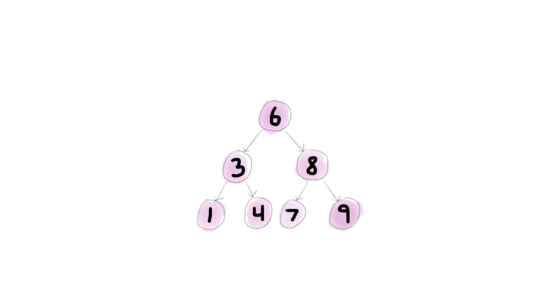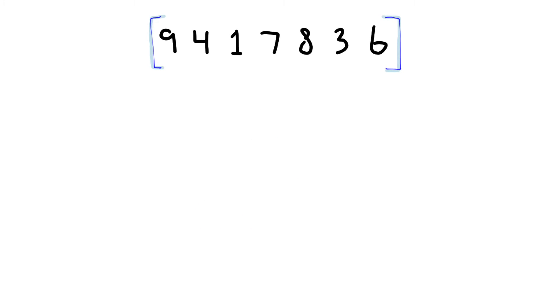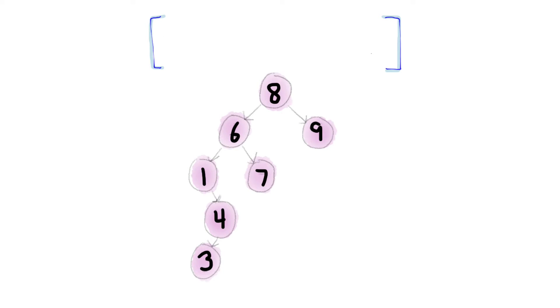You might be wondering, what if the original array had the same numbers in a different order? Would search still work? What if these numbers came in this order? Here is the tree. And here is the search.